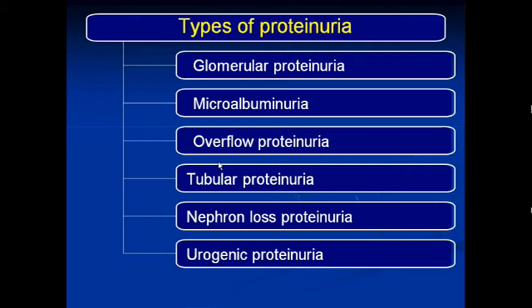By the definition of proteinuria and albuminuria, there is some categorization of proteinuria. The types studied are: 1. Glomerular proteinuria, 2. Microalbuminuria, 3. Overflow proteinuria, 4. Tubular proteinuria, 5. Nephron loss proteinuria, and 6. Urogenic proteinuria. These are the various types of proteinuria clinically defined in different conditions.